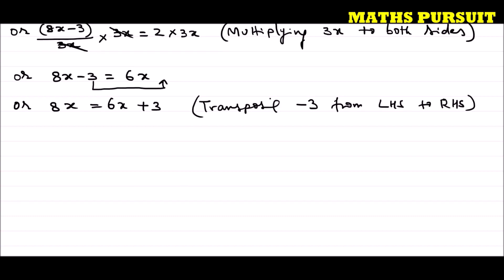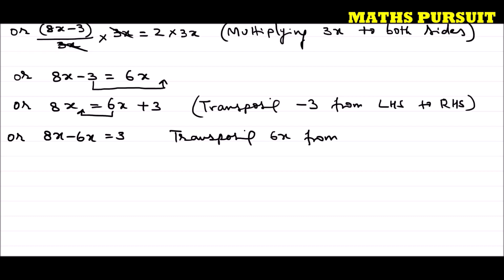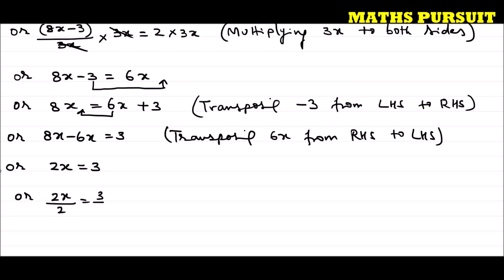Now I can write 8x minus 6x is equal to 3. I am transposing 6x from the right hand side to the left hand side, to bring all x-terms to the left and all constants to the right. So 8x minus 6x equals 2x, giving us 2x is equal to 3.